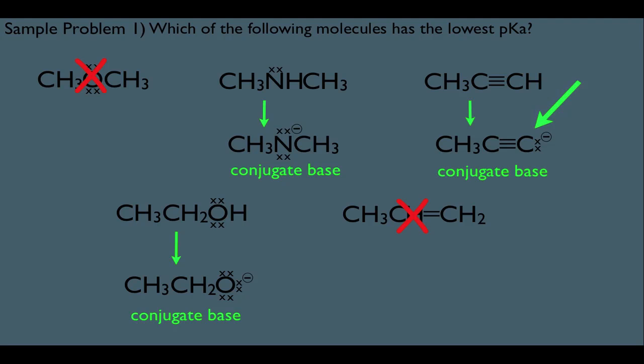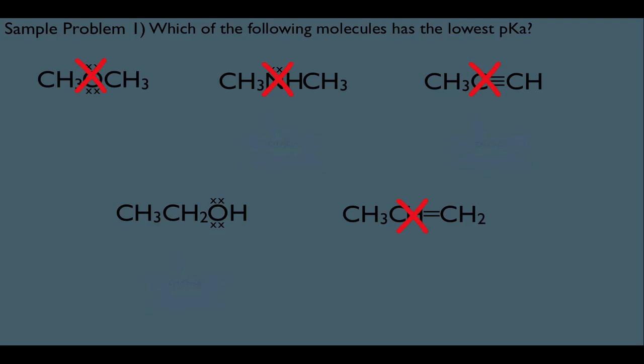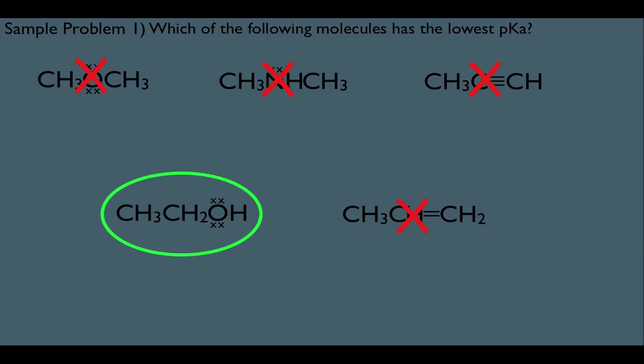So the question is, which one of these atoms bearing the negative charge is more electronegative? That would be, of course, oxygen. That means this guy is ruled out right here, and so is this one, which means we're done. We got to our answer. This would have the lowest pKa or be the strongest acid.